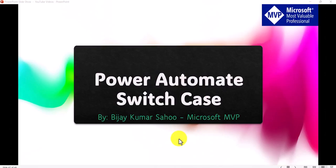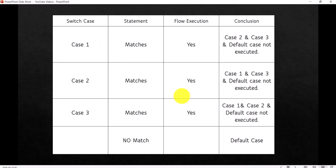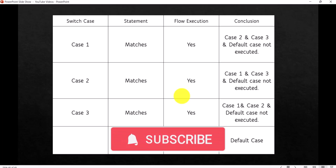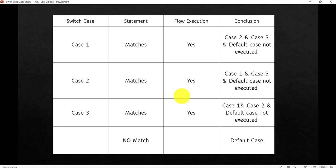Let us first understand what is a switch case in Power Automate. Like in any programming language, you can use switch case where basically certain matches will happen and then you want to execute some flow actions. When you add a switch action into the flow, it will allow you to create multiple cases. If case one matches, then all other cases will not be executed. If case one didn't match, it will go to case two. If none of the cases matches, then the default case will be executed.